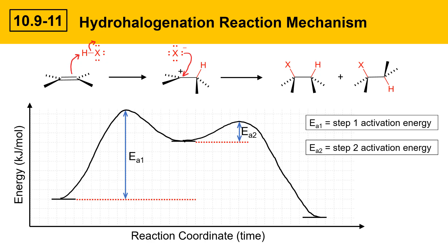We can also look at the energy difference between reactants and products — that's delta G for the reaction, the overall energy change. The products are lower in energy than the starting materials, so delta G is negative. This is a reaction that would favor products. Reactions like to go from higher in energy to lower in energy, and when delta G is negative, products are favored. The next slide will cover some of the reasons delta G is negative for hydrohalogenation reactions.